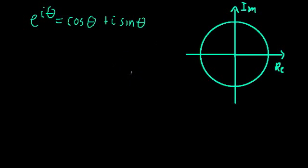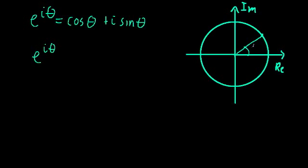Welcome back. This is going to be an odd video where we talk about the qualitative behaviors of the complex exponential function and its relationship with cosine and sine. Let's start by looking at e to the i omega. We know this describes a point in the complex plane with a magnitude of 1 and a phase of theta, so it lies on the unit circle of the complex plane.